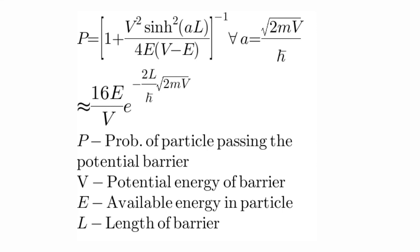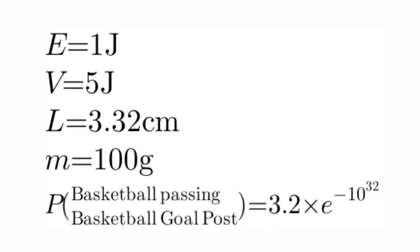The probability is 3.2×10^-32. As you can see, quantum mechanics doesn't have that much effect on objects like that on macroscopic scales, and the probability is very small that the basketball can pass through the goal post.